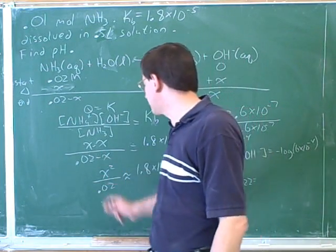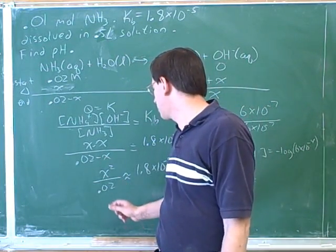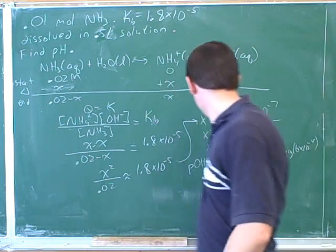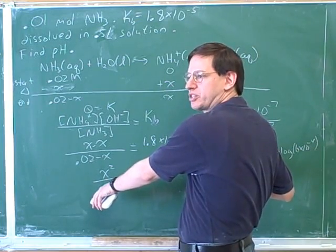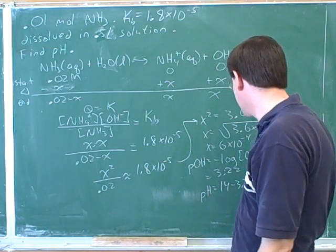You make the normal approximation to avoid using the quadratic formula. You said that 0.02 minus x is just 0.02. You can see here that x really is a lot smaller than 0.02. It's like a hundred times smaller. So, that's a safe approximation.